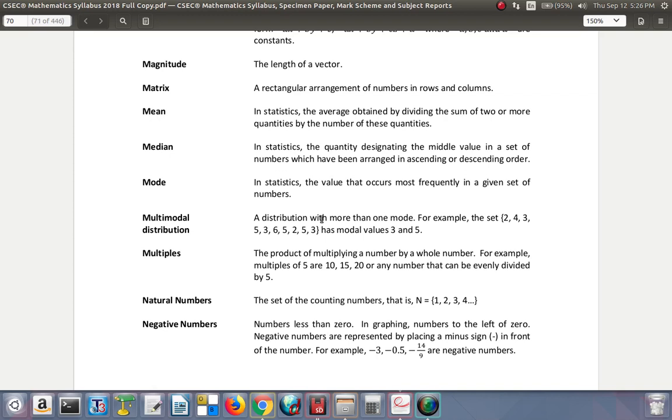Mean: in statistics, the average obtained by dividing the sum of two or more quantities by the number of those quantities. So you add up the quantities and then whatever sum you get, you divide it by the number of quantities that are there.